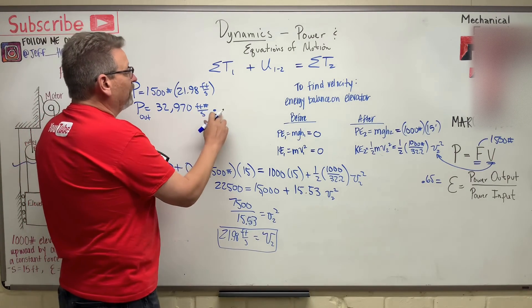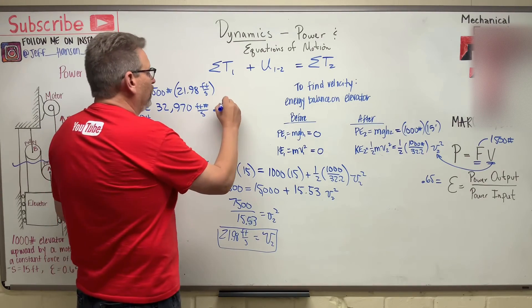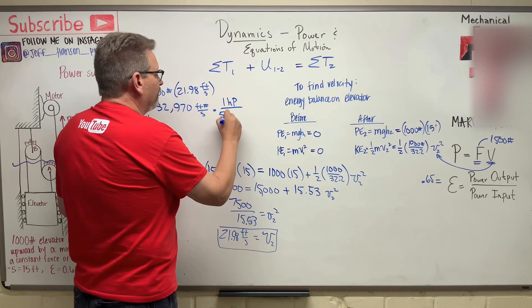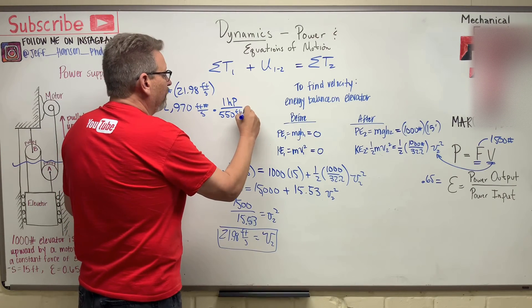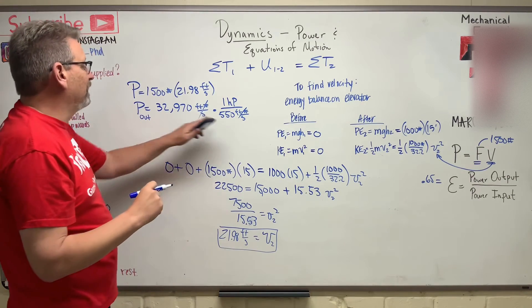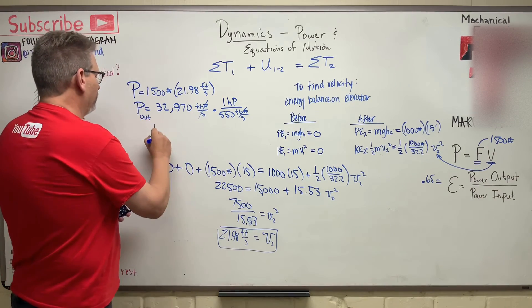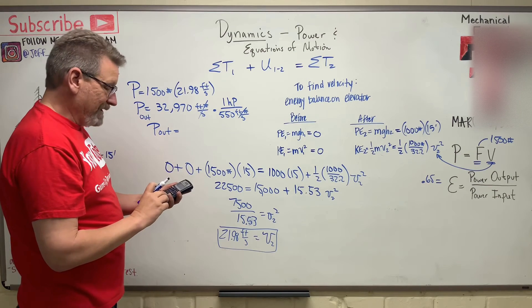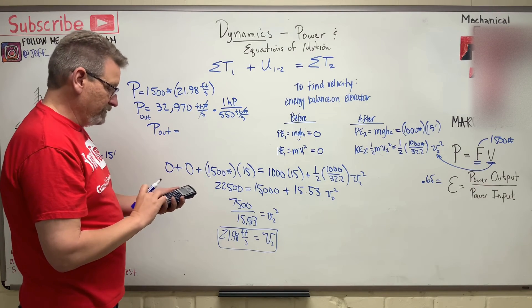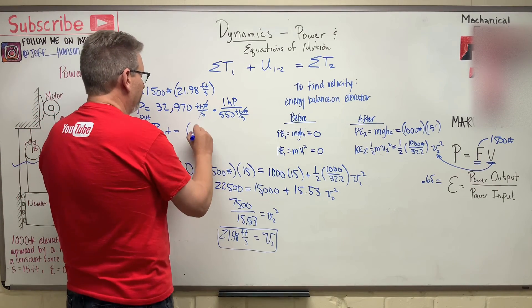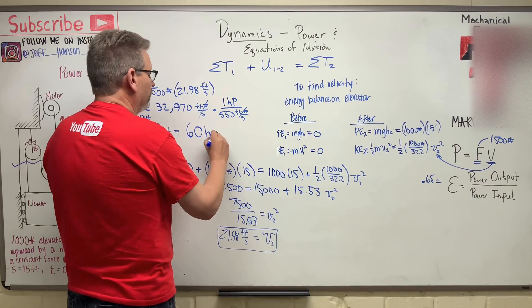I need to get rid of that feet, pound per second because I want it in horsepower. So 1 horsepower is equal to 550 foot pounds per second. Now that, and that will cancel out. Now that's going to give me horsepower. So P out is equal to that divided by 550, 59.94, really 60 horsepower.